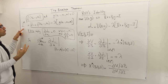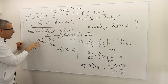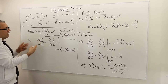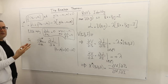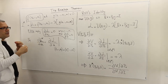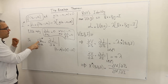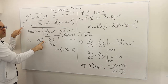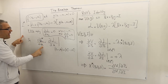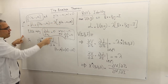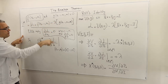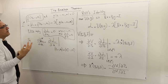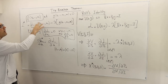So therefore the envelope theorem says: it shouldn't confuse you whether I'm using d or del here, but the partial derivative of my optimal value function L* with respect to the parameter a is equal to the Lagrangian function's partial derivative with respect to a, calculated at the optimal point. That's the idea of the envelope theorem when we have constraints.